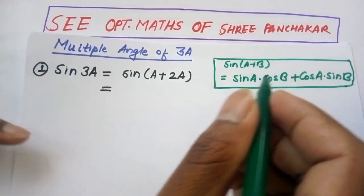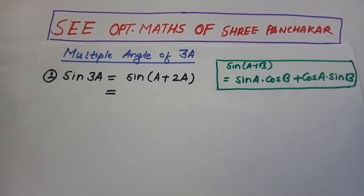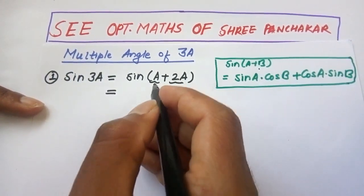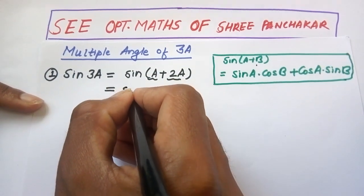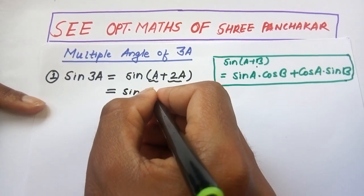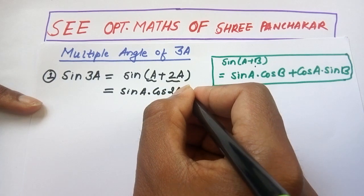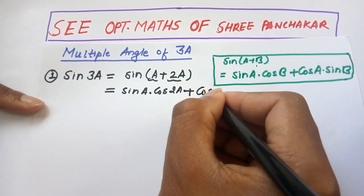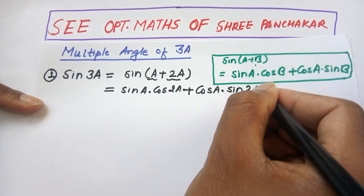So applying the compound angle formula to sine(a + 2a), we get: sine a dot cos 2a plus cos a dot sine 2a.